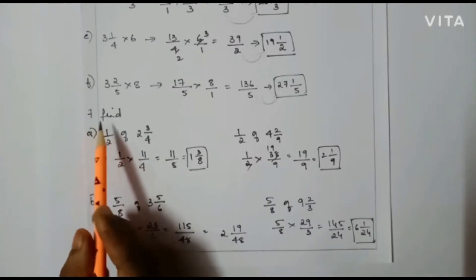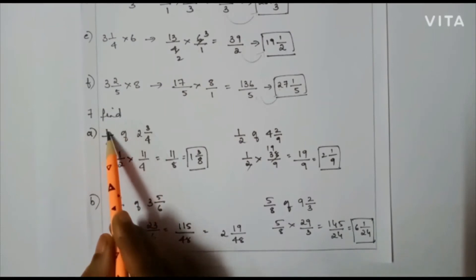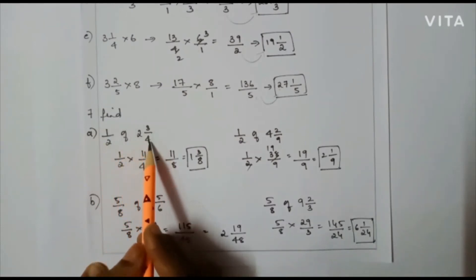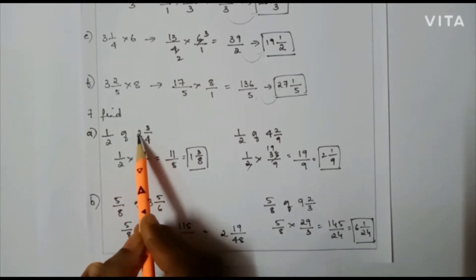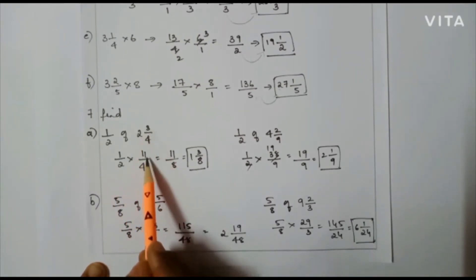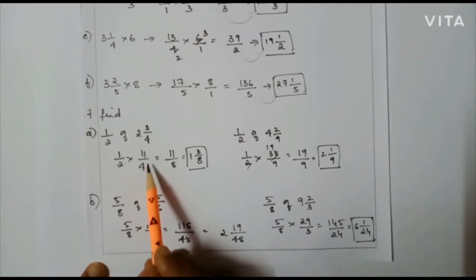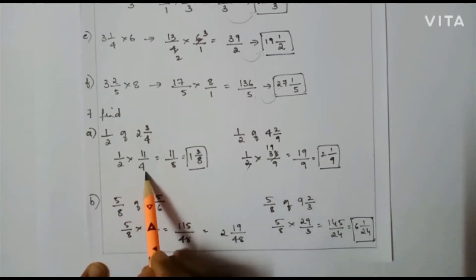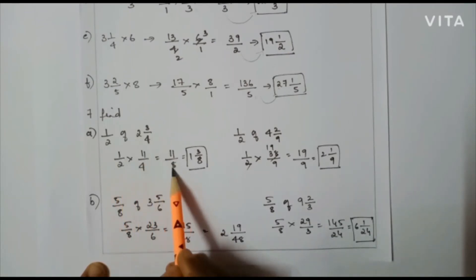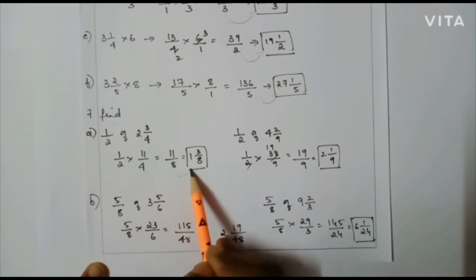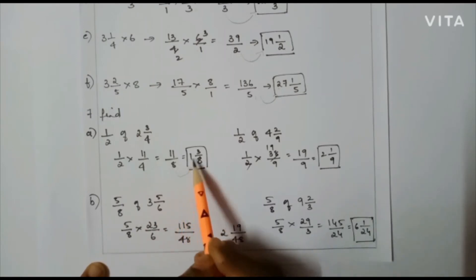Next: find 1/2 of 2(3/4). Convert the mixed fraction: 4×2=8, plus 3 = 11/4. So 1/2 × 11/4. I check whether I can cancel — I can't cancel here. So 1 × 11 = 11, and 2 × 4 = 8. It is an improper fraction. Converting to a mixed fraction gives 1 and 3/8.